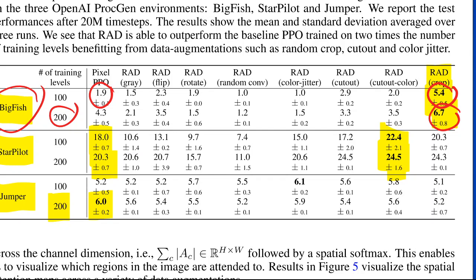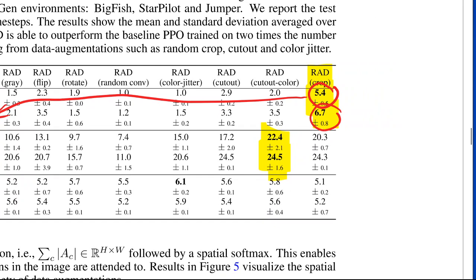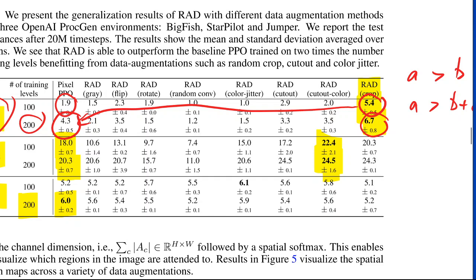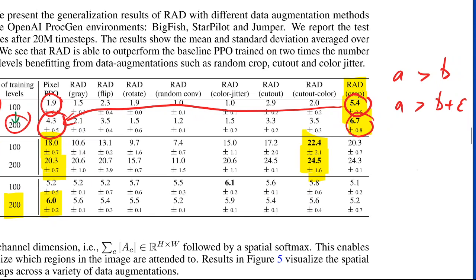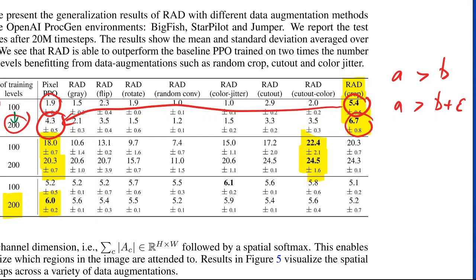And they claim that RAD with random crop trained with 100 training levels outperforms the pixel based PPO with 200 training levels on both big fish and star pilot environment. This shows that data augmentation can be more effective in learning generalizable representations compared to simply increasing the number of training environments. How, why do you compare two different things if you don't show that maybe they're orthogonal? Even on the 200 levels, you gain over the pixel based PPO. And if A is bigger than B, then probably A is going to be bigger than B plus some epsilon. And that doesn't really warrant their statement where they say, oh look, this is even better.